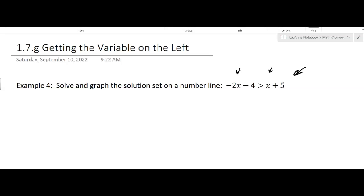OK, now sometimes the x is on the right. We'll do that in another example. But for now, we have the choice. And so we're going to bring the x over to that side. So I'm going to subtract x from both sides and that's going to give me negative 3x minus 4 is greater than 5.